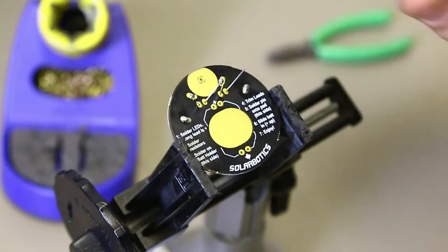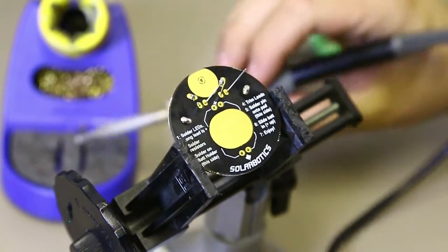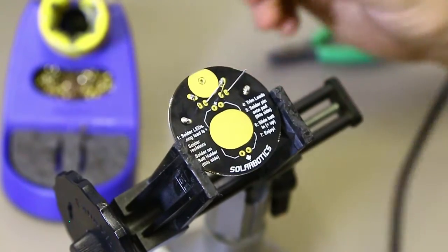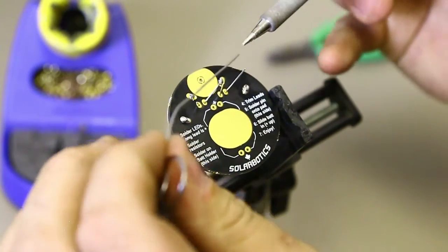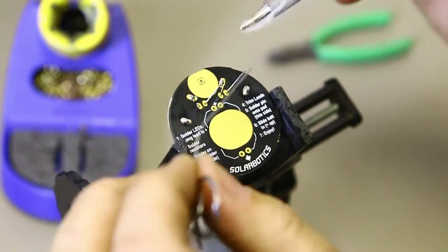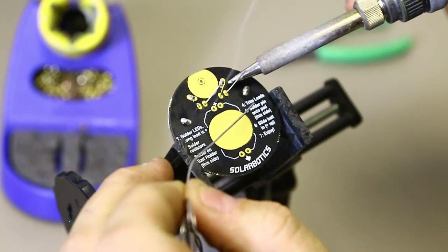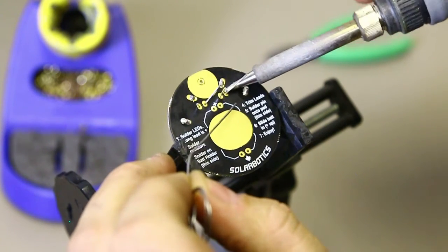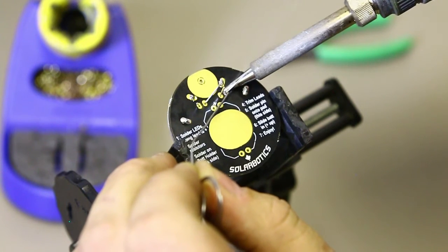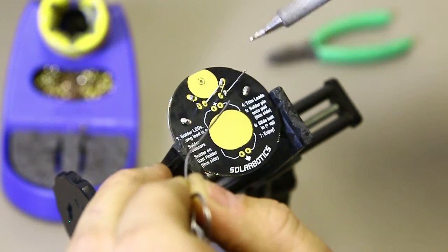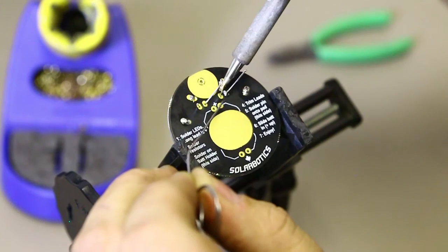Once again, when soldering, remember to clean your tip every single time, either on the wet sponge or on the brass, and then tin the tip again. Apply the wet of the iron to both components as best you can. Wait a half a second here, and then apply solder to both on the opposite side from the iron.